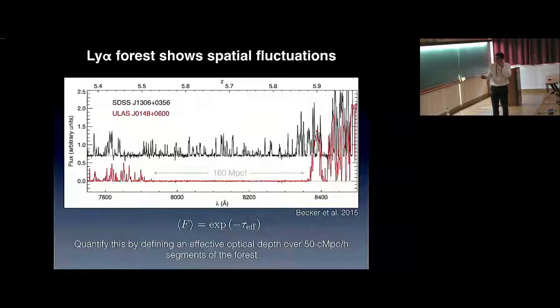For the purpose of doing quantitative science, one would like to quantify this. One way that is traditionally done is to take the average transmission in chunks of 50 comoving megaparsecs over h in these Lyman-alpha forest spectra, and then define something called the effective opacity as the negative logarithm of that quantity.